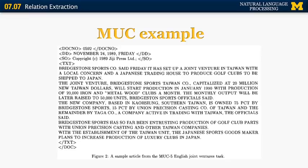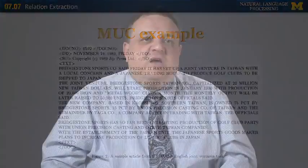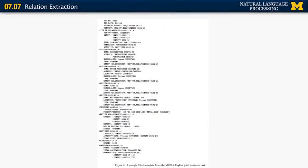Here's an example of a MUC story. This is from the MUC 5 English joint ventures task. It talks about Bridgestone Sports Corporation said Friday that it has set up a joint venture in Taiwan with a local concern and a Japanese trading house to produce golf clubs to be shipped to Japan. In this particular implementation of the MUC challenge, participants were given a set of articles and they had to identify the companies that were having a joint venture, then fill in a set of slots about the particular event.